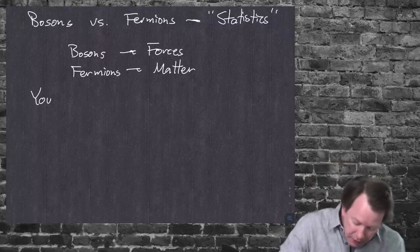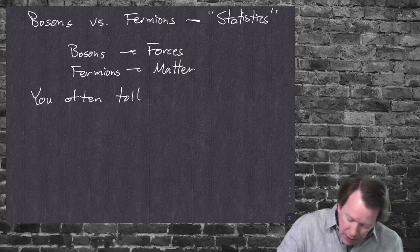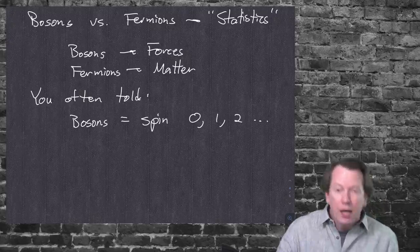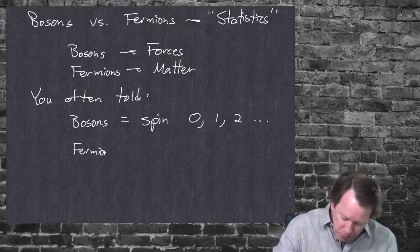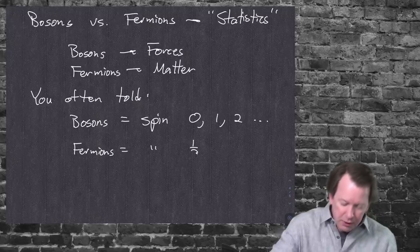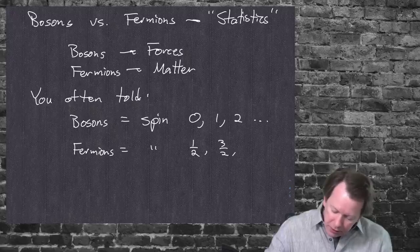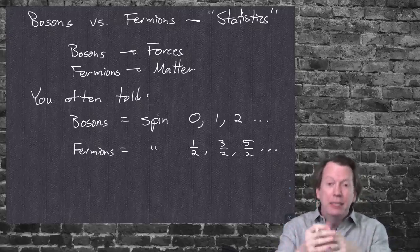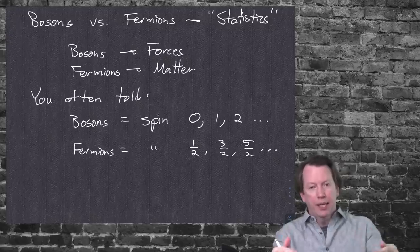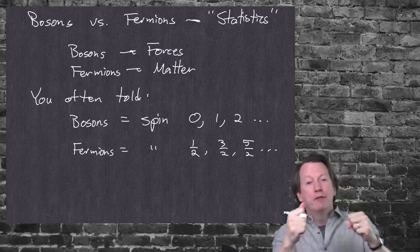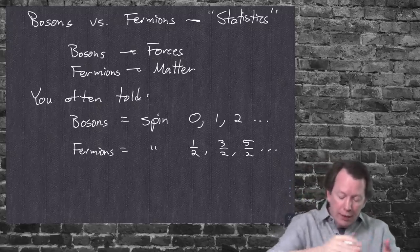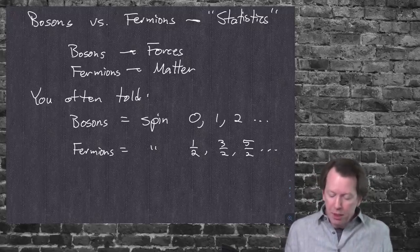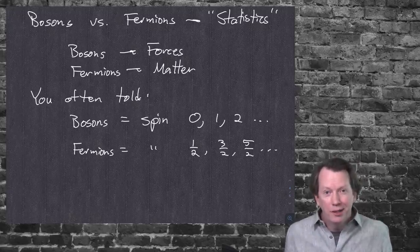You are often told that bosons have spin 0, 1, 2, ... (integer spin) and fermions have spin 1/2, 3/2, 5/2, ... (half-integer spin). That's a true fact, but it's not the definition. The defining principle is whether particles pile on or take up space — the Pauli exclusion principle. The connection between having half-integer spin and the exclusion principle is called the spin-statistics theorem. To get there, we need to talk about what spin actually is.